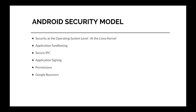Talking about the Android security model — now that we've looked into the Android architecture and are familiar with its different layers — let's look into the Android security model. The security has been given to Android at seven different layers: one being security at the operating system level, which is at the Linux kernel level; then there is application sandboxing, as we already discussed; then there is secure inter-process communication, like how two different processes would communicate with each other.